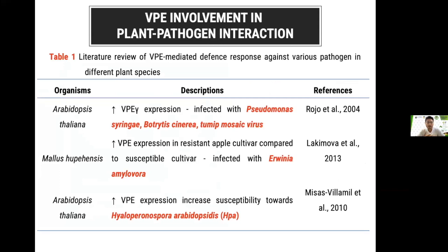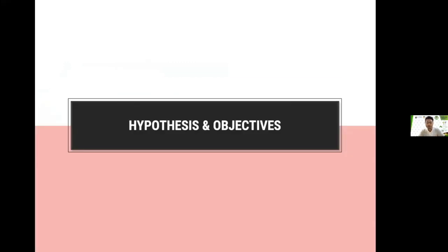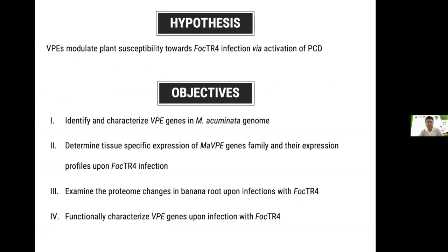Studies on VPE involvement in plant-pathogen interaction have been done in Arabidopsis thaliana and also Malus domestica, which is apple. We know that VPE could have the potential to be the next gene used to confer resistance against pathogens. We hypothesized that VPE modulates plant susceptibility towards FOC TR4 infection through activation of programmed cell death. In this master's study, I have four main objectives: to identify and characterize MA VPE genes from banana; to determine tissue-specific expression of VPE gene family and expression profiles upon FOC TR4 infection; to examine the proteome changes in banana root upon FOC TR4 infection; and to functionally characterize VPE genes upon infection with FOC TR4.